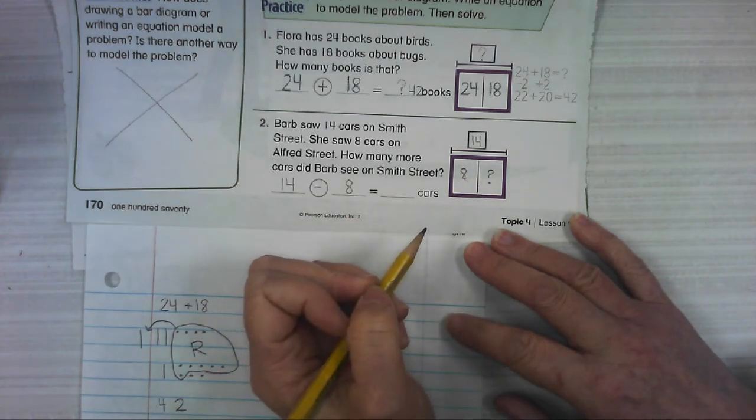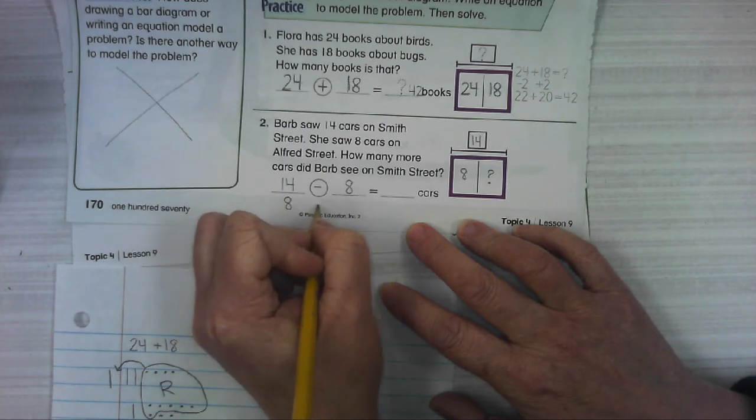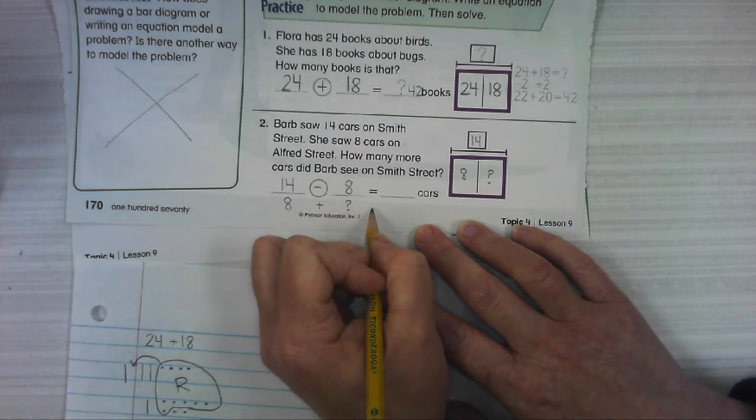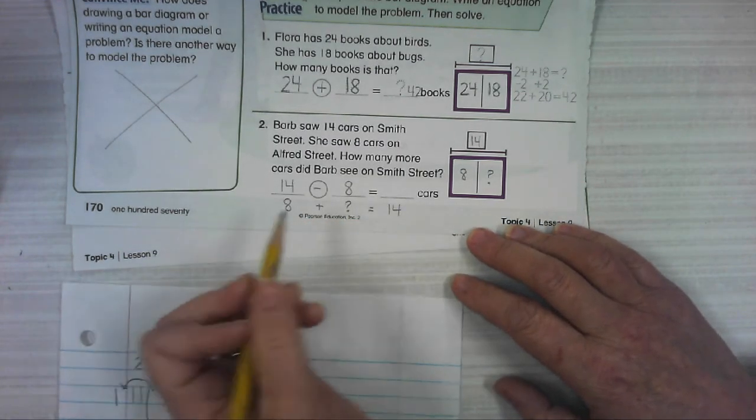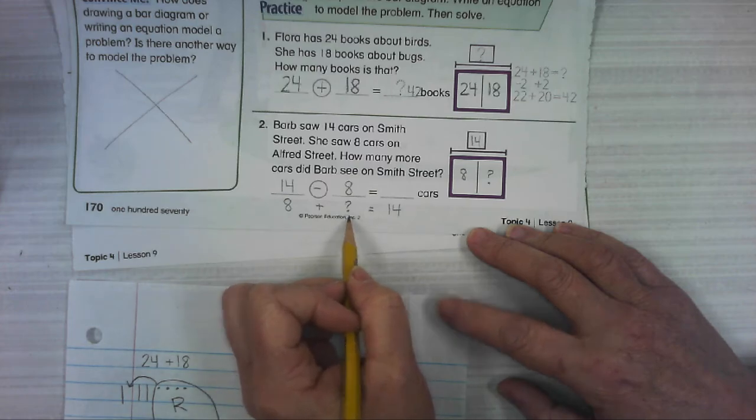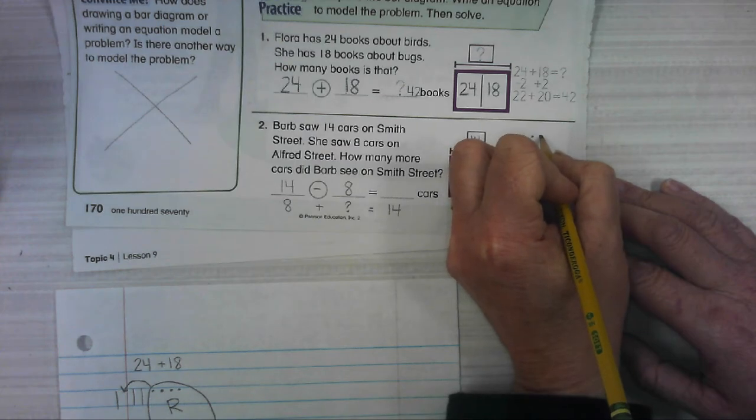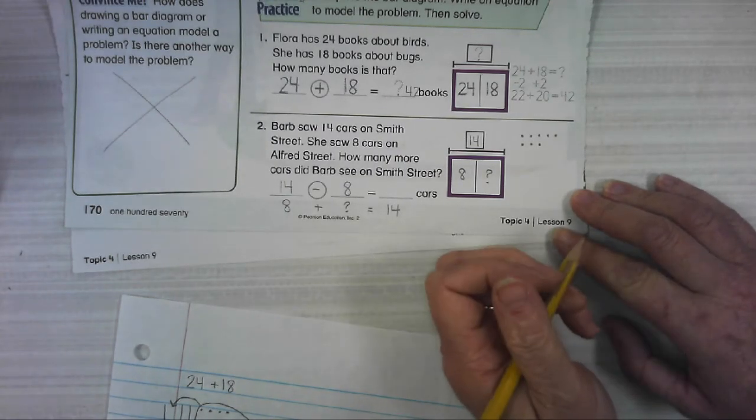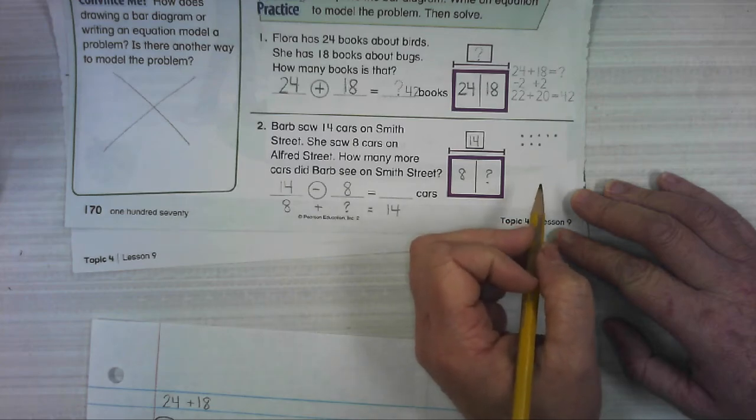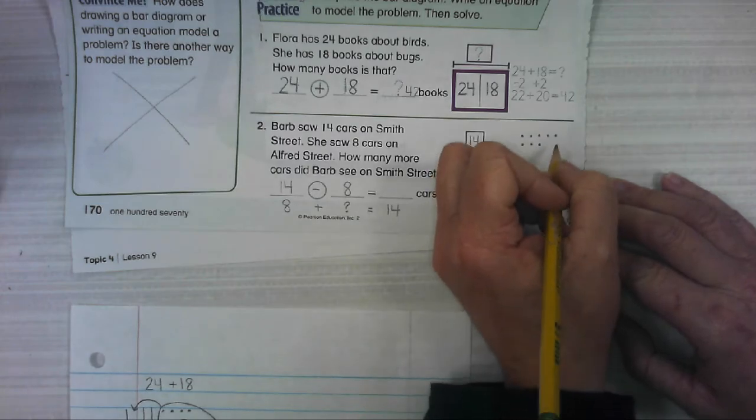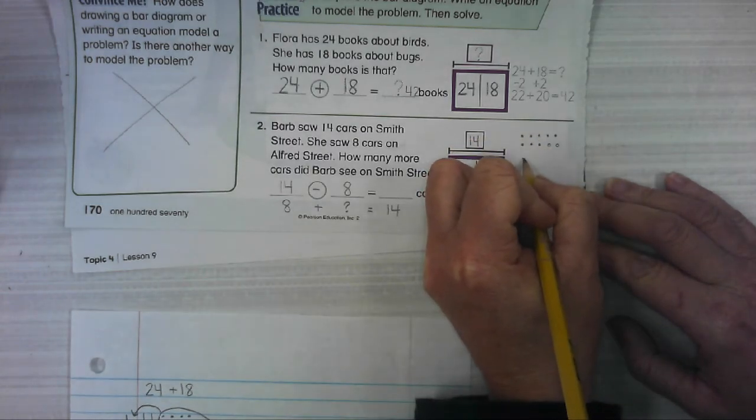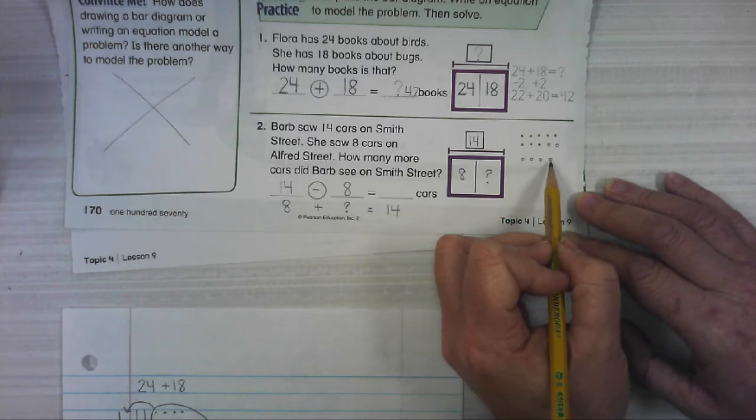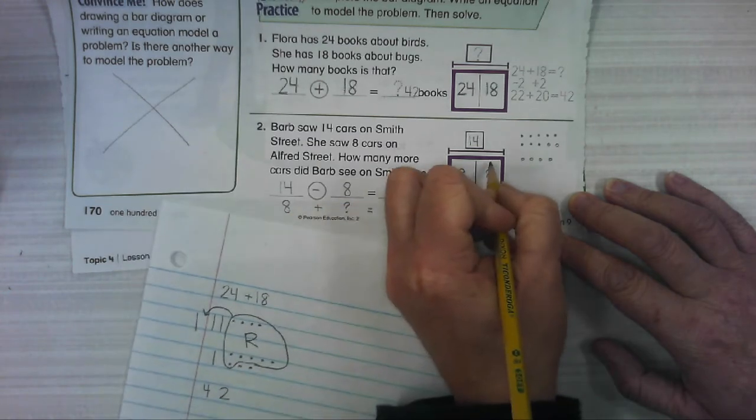14 minus 8 equals what? We can also look at it as 8 plus something. 8 plus something equals 14. I hope that you can know your addition facts and know what this question mark is. If not, we can draw 8 counters and then we can add up to get to 14. So we're at 8, we have to get to 14. 9, 10, 11, 12, 13, 14. Okay, and so I had to put 1, 2, 3, 4, 5, 6 more. So this is 6.